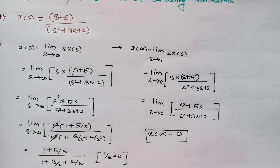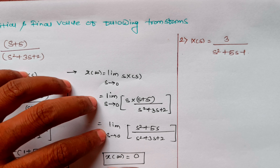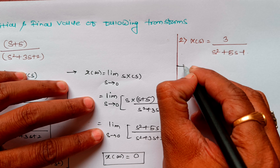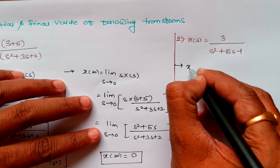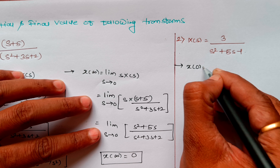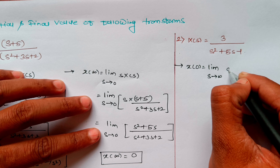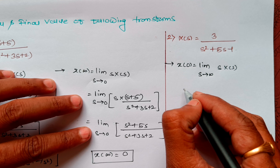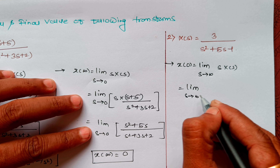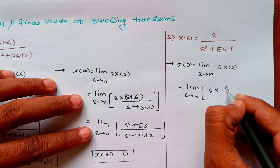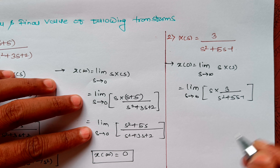Now let us take the second example. The second question is X(s) = 3 / (s²+5s−1). Let us find the initial value: x(0) = limit as s tends to infinity of s into X(s), which is s into 3 / (s²+5s−1).